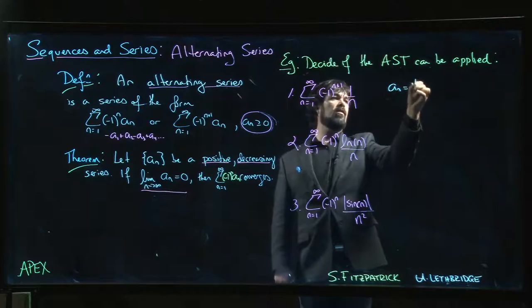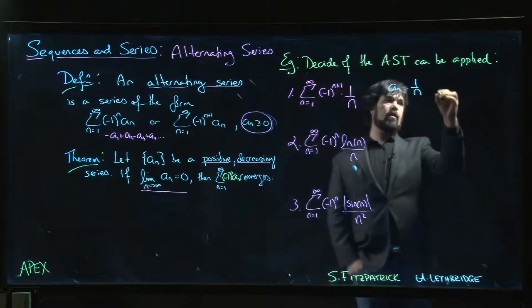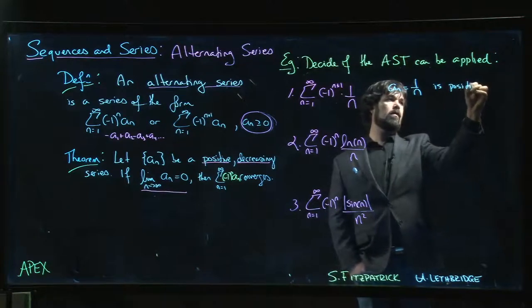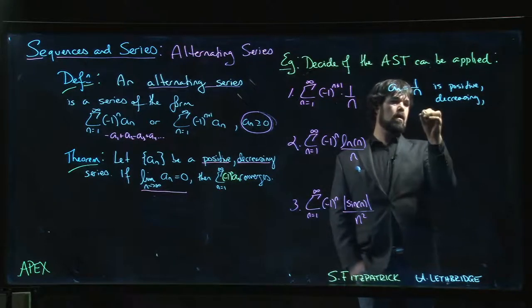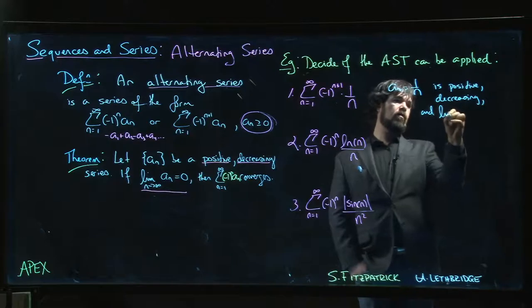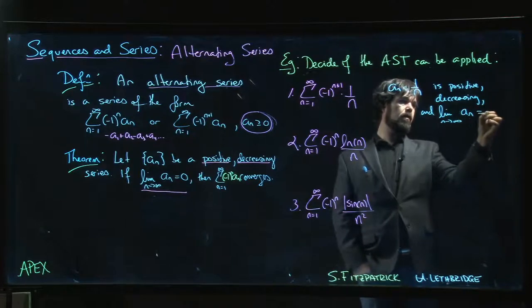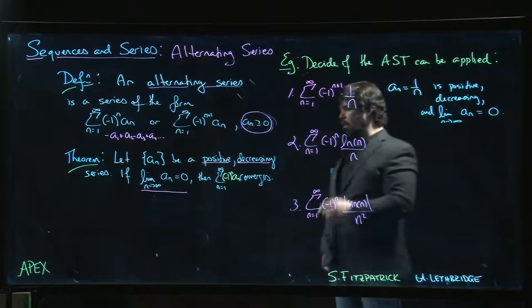So let's see: this is positive, it's decreasing, and we also know that the limit as n goes to infinity of a_n is 0. So we check those three boxes.